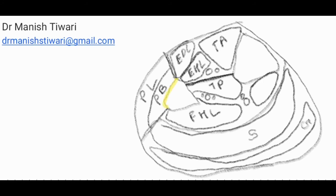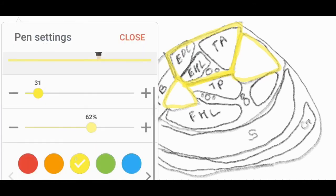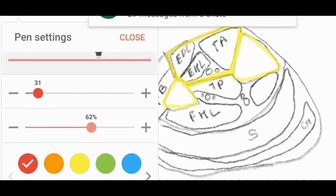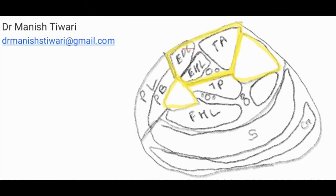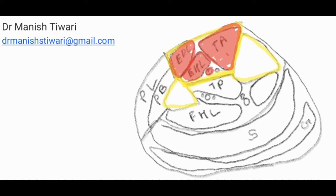Let us revise the anatomy once again. This is the fibula, this is the tibia, and this is the interosseous membrane joining these two bones. This is the anterior compartment. In the anterior compartment the muscles are extensor digitorum longus, extensor hallucis longus, and tibialis anterior. Then we have the anterior tibial artery and veins.